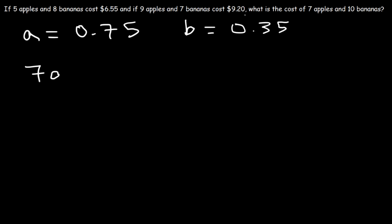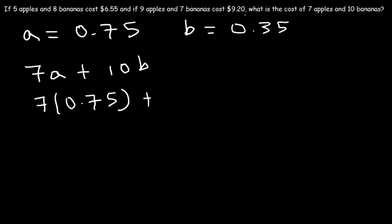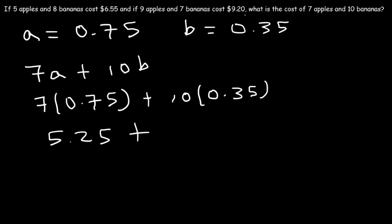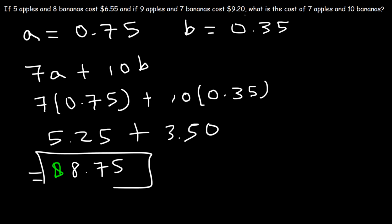Now we can find the cost of 7 apples and 10 bananas. 7 times $0.75 equals $5.25, and 10 times $0.35 equals $3.50. Adding these together gives $8.75. So the cost of 7 apples and 10 bananas is $8.75.